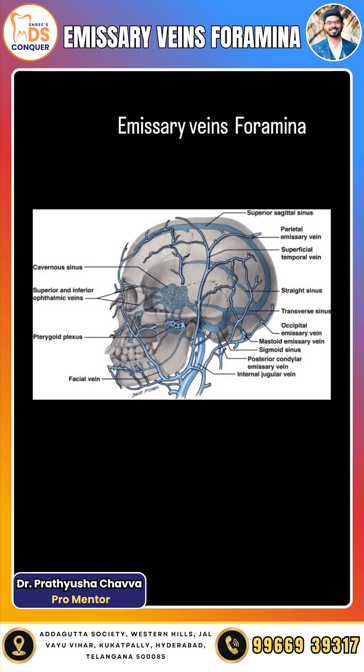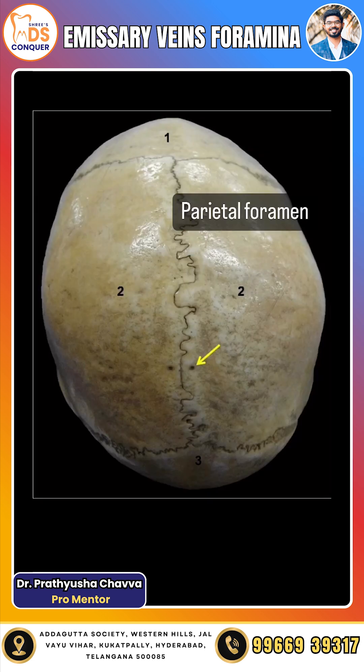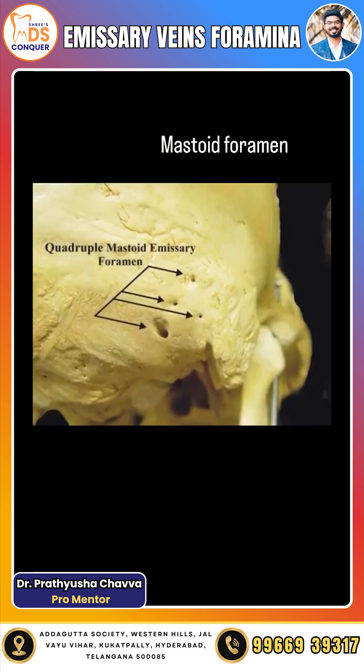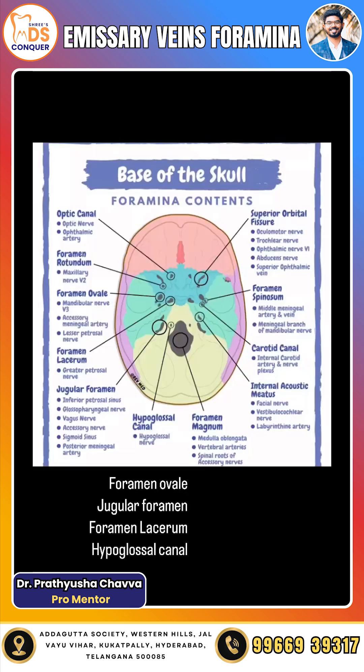Let's look at the various foramina through which the emissary veins pass out from the skull. The marked arrow indicates the parietal emissary foramen. Then we have the mastoid emissary foramen, which can be 1 to 4.